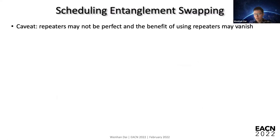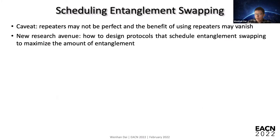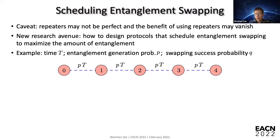But this is the ideal case — there is a caveat. The caveat is that the repeaters may not be perfect. For example, as mentioned in the previous talk, Bell measurements are sometimes probabilistic. So if your entanglement swapping is not successful all the time, the benefit of using repeaters may vanish. We may ask: should we design scheduling protocols for entanglement swapping so that the amount of entanglement shared between the two end nodes can be maximized? Here is a toy example showing that scheduling protocols really matter for entanglement swapping.